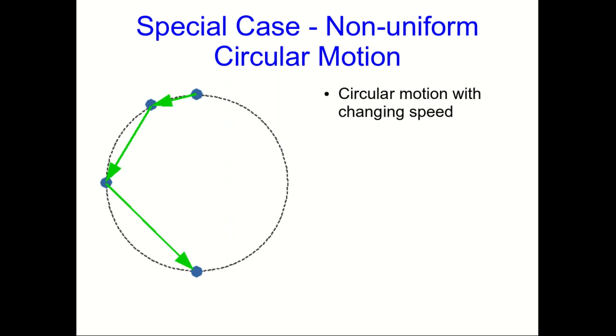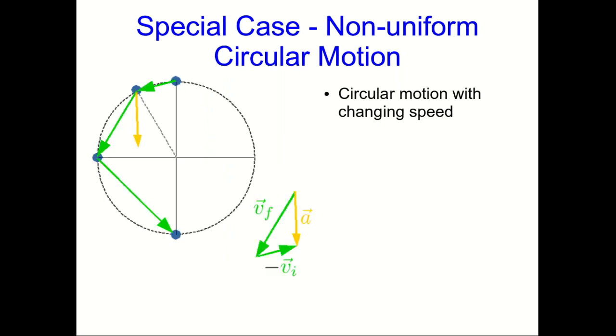A final special case that we'll spend some time on is non-uniform circular motion, which just means circular motion with a changing speed. So here's a motion diagram for circular motion where this object is speeding up as it goes around the circle, and we can find the acceleration as usual at one point by just carrying out the usual vector subtraction.